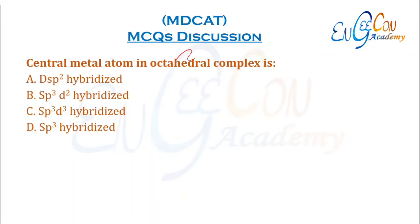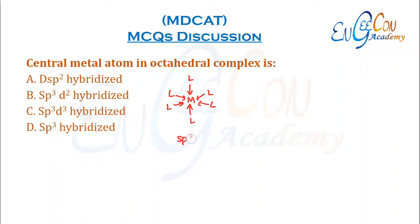Central metal atom in octahedral complexes. An octahedral complex has six ligands bonded to the central metal atom. Six hybridized orbitals are needed, which are present in sp³d² hybridization. So B is the correct option.